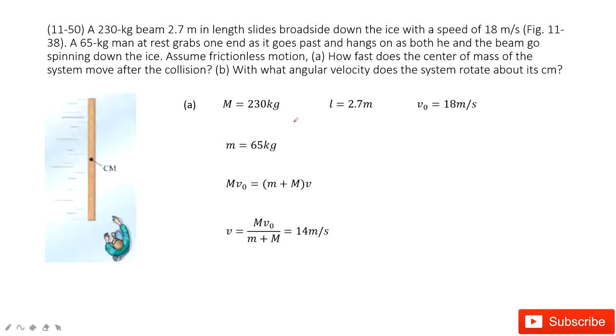Chapter 11 is about angular momentum. In this problem, we have a beam with given mass M and length l. It moves with velocity V0 to the right, the linear velocity.